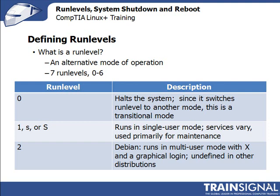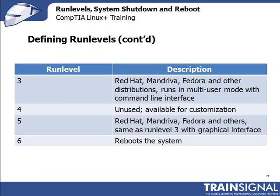Under the Debian distribution, run level 2 launches Linux in a multi-user mode with a graphical user interface, called X. Under Red Hat, Mandriva, and Fedora — which is fast becoming a personal favorite of mine — and in fact many other distributions, run level 3 launches Linux in a multi-user mode or networking mode with a command line interface. Run level 4 is unused and can be customized.